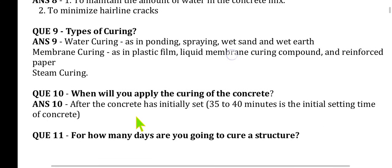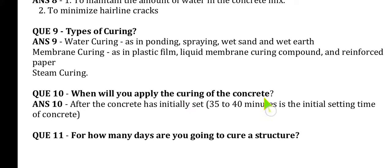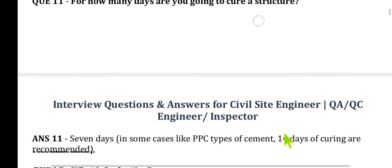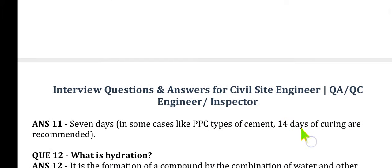Question 10: When will you apply curing of concrete? After the concrete has initially set — 35 to 40 minutes is the initial setting time of concrete. Question 11: For how many days are you going to cure structures? Minimum curing time is 7 days; in some cases, such as PCC types of cement, 14 days of curing are recommended.